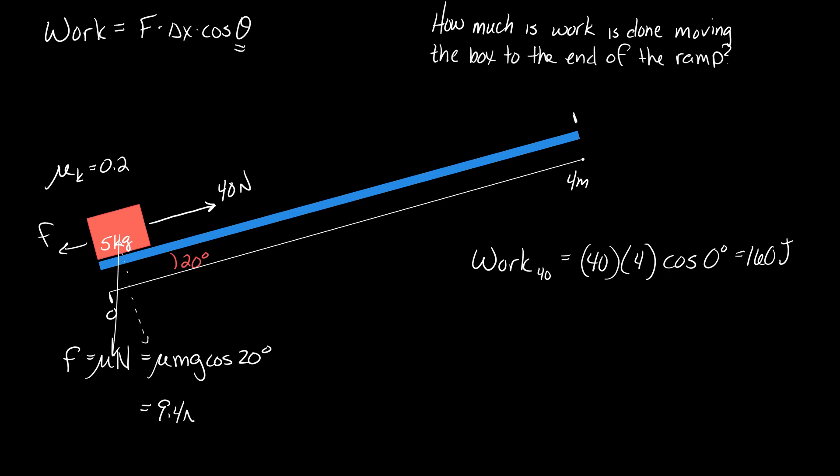So, 9.4 newtons. So, the work done by friction: 9.4 newtons times 4 meter displacement times the cosine of the angle between friction and the displacement. What will that be?